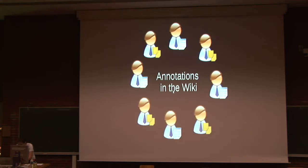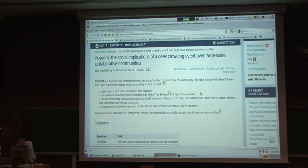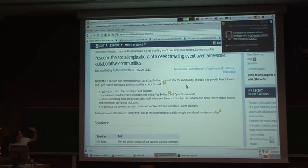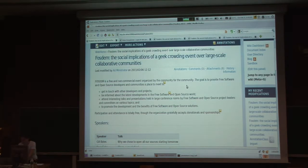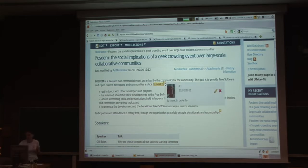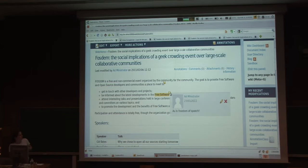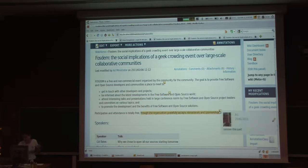So this is demo time. I've created this very interesting document about FOSDEM, which I shamelessly copied from the internet, and we can see that some people have added some annotations, like this one here. You can see the little icon, you can read the text, and you can also see the annotations on top of it. For example, this one is a rephrasing suggestion — instead of 'to meet to', the suggestion is to do 'to meet in order to'. This is a little contextual comment, and this is also a suggestion to remove a part.